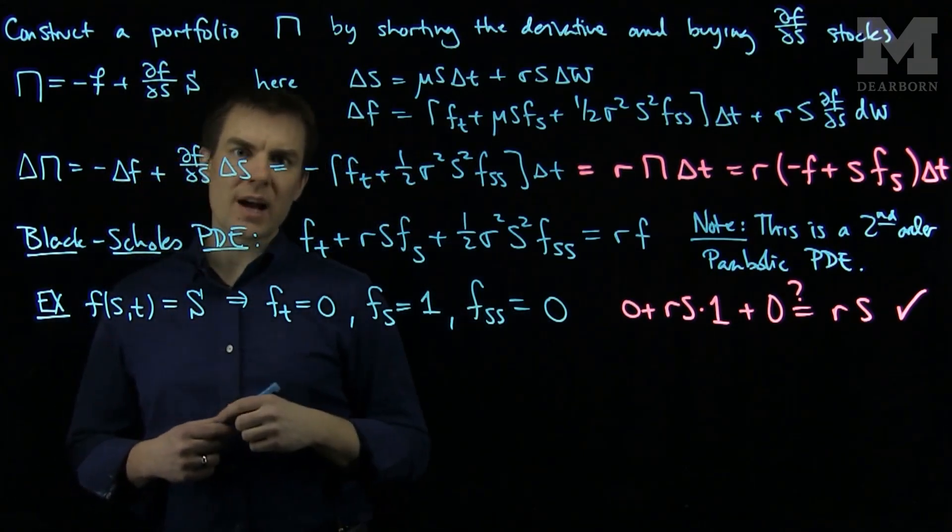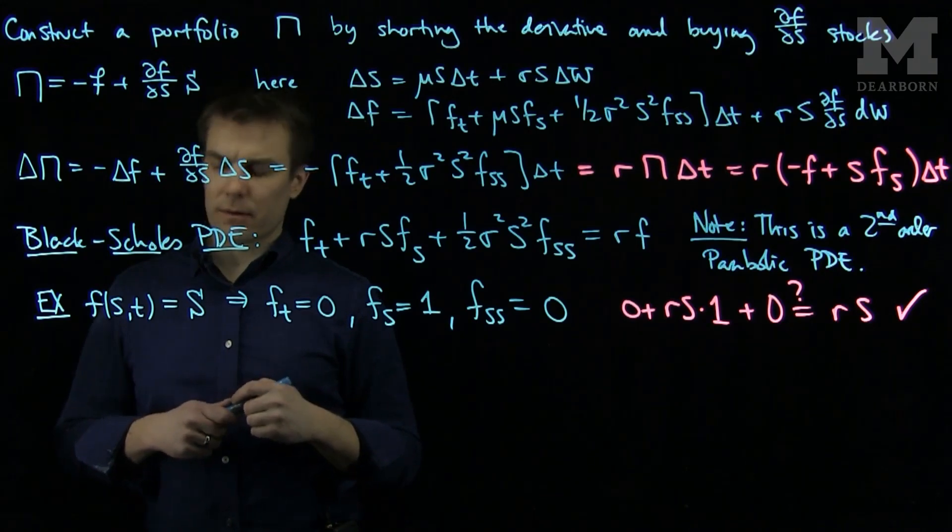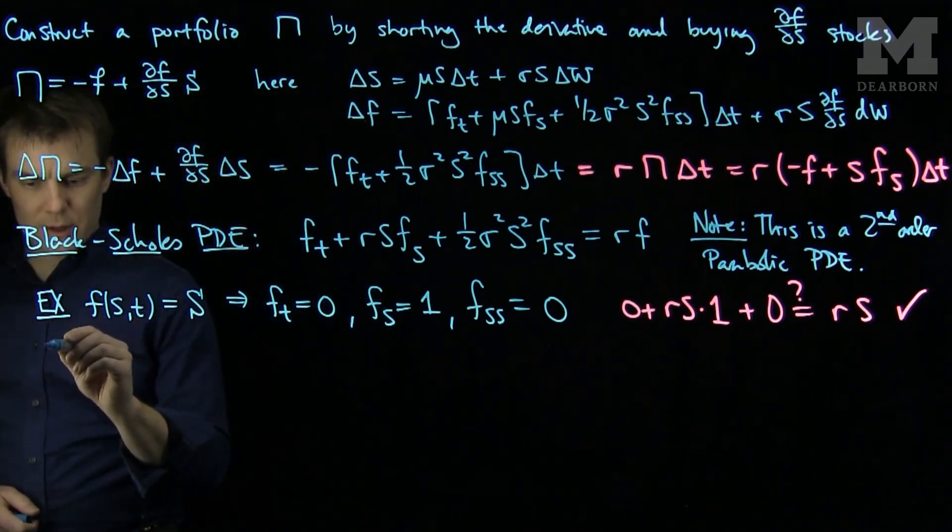is a solution to the Black-Scholes equation. In other words, if you own the stock, that is a derivative. Similarly, we can consider the next example,